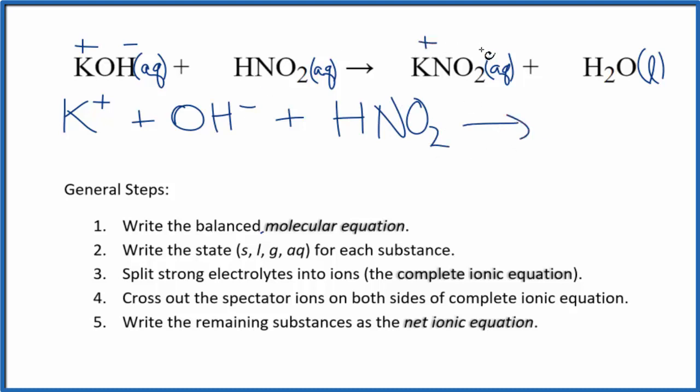We have a positive, the nitrite ion is negative, so we'll have K+, because this is a strong electrolyte, has that group one metal there in the front, plus the nitrite ion, NO2-, and we don't split water apart in net ionic equations either. So this is the complete ionic equation.